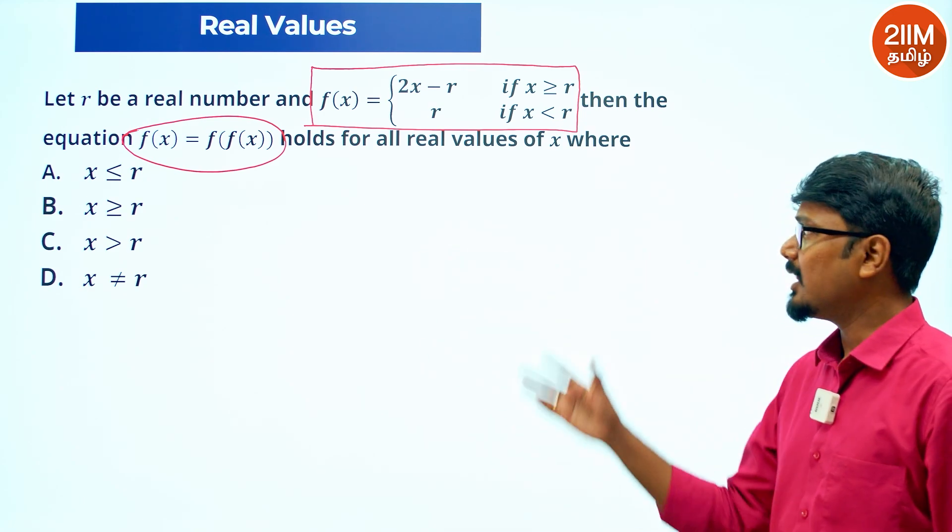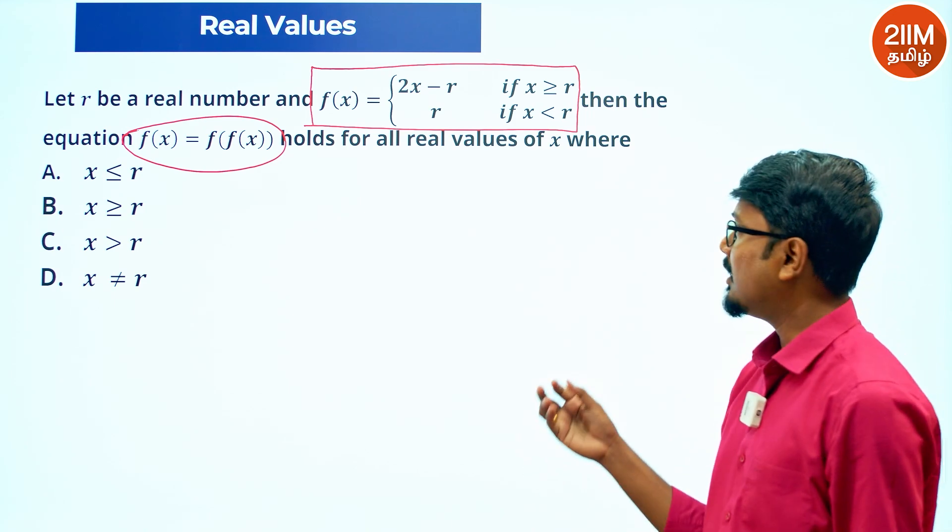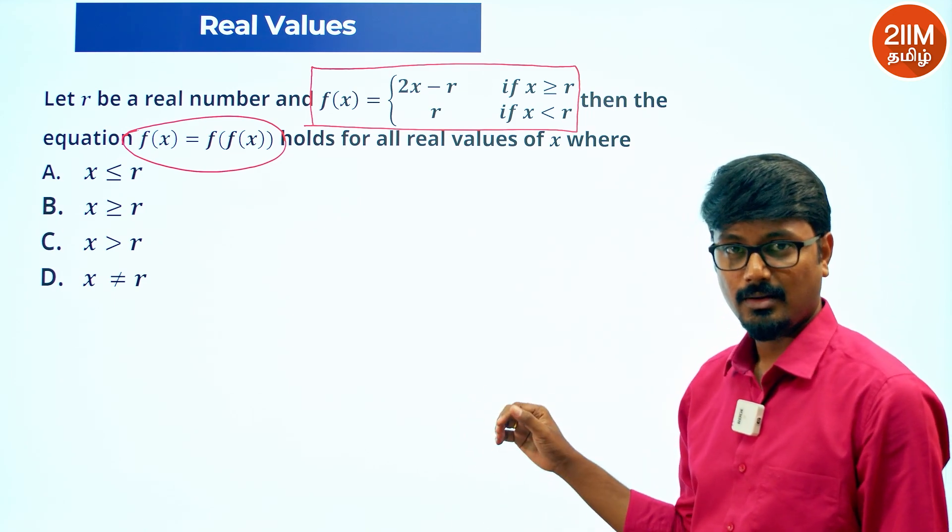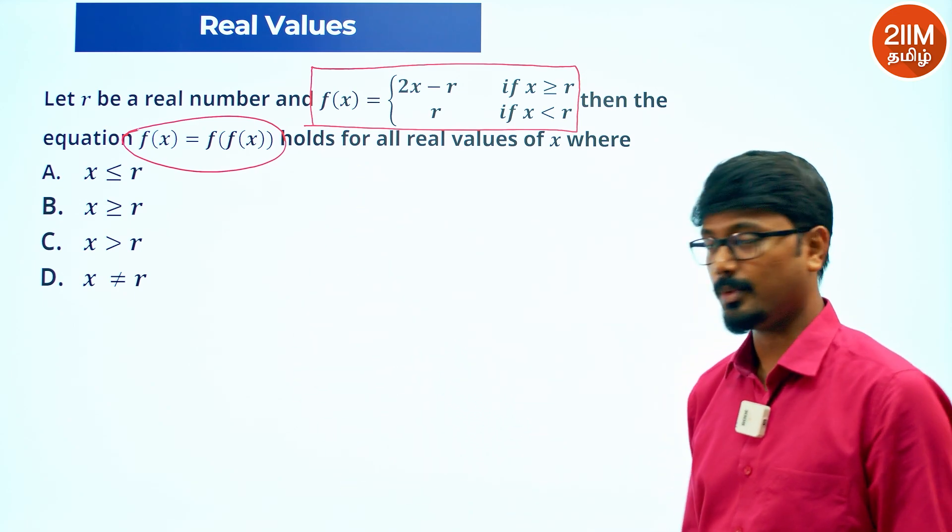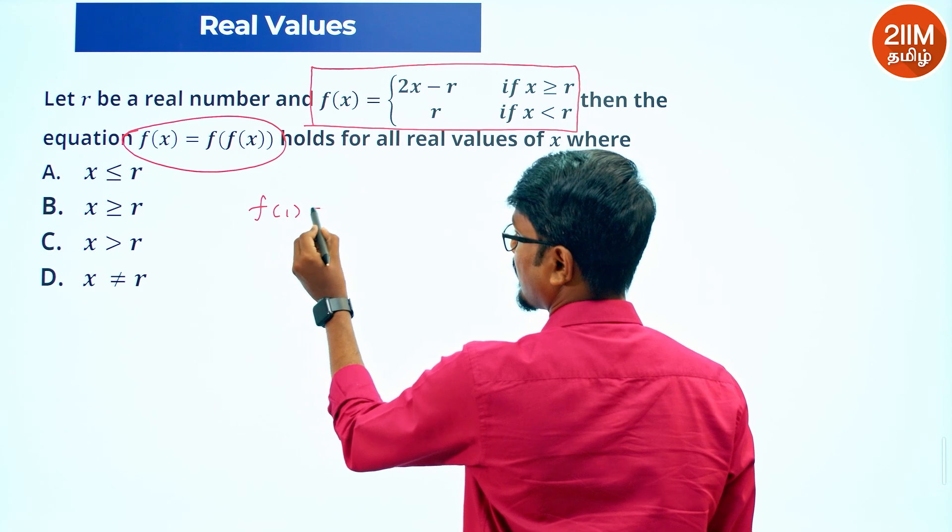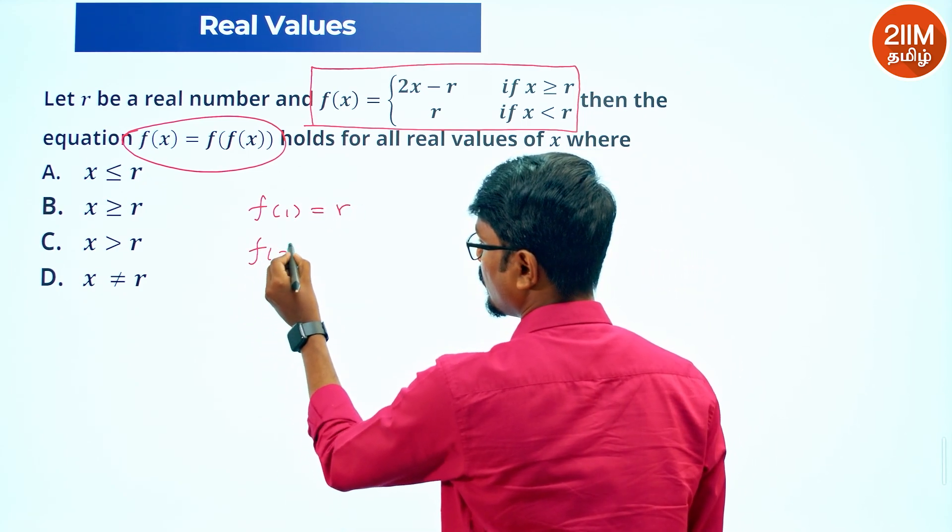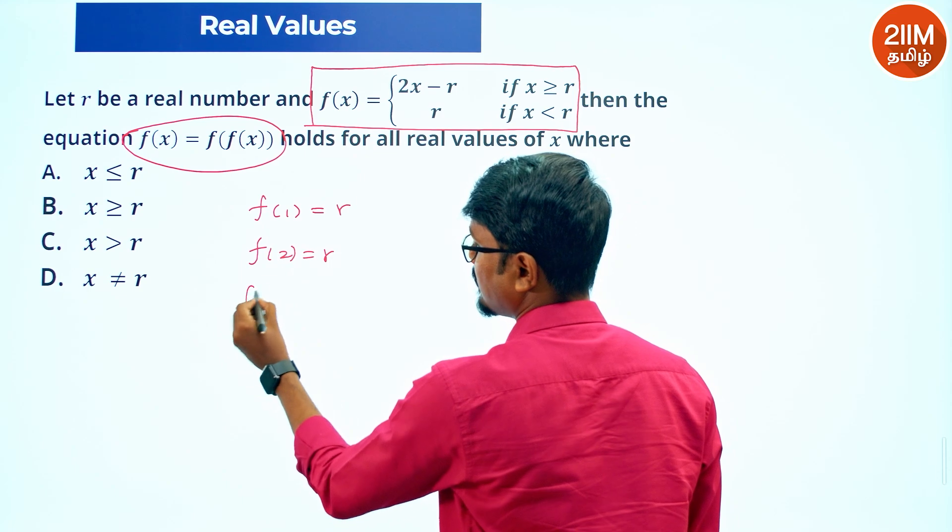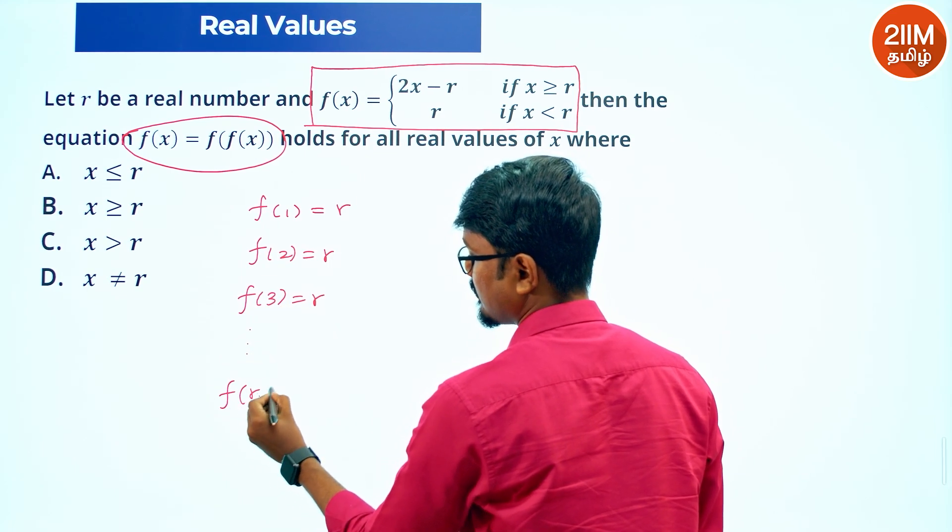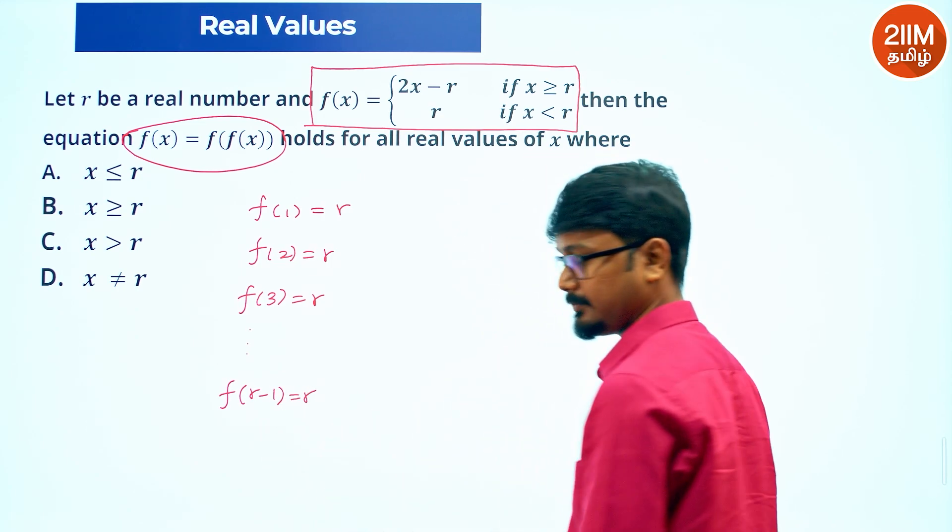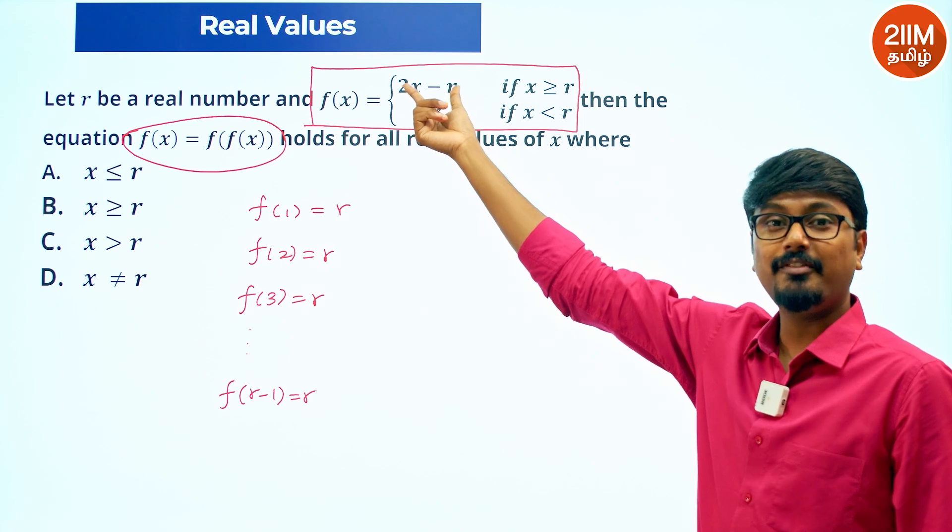What is the function? When x is less than r, r is any value. For the ease of calculation, let's test some values. So f of 1 will be r, f of 2 will be r, f of 3 will be r. f of r minus 1 will be r. When f of r, the function is at x equals r value, so the function will behave differently.